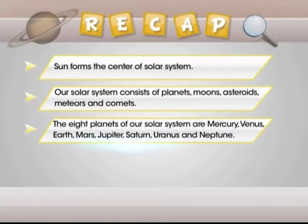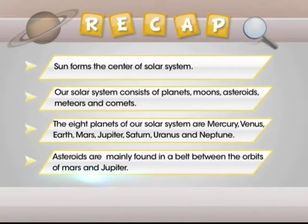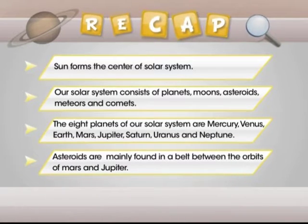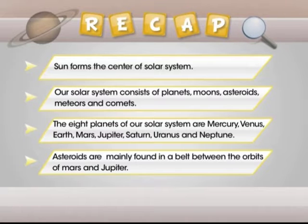The eight planets of our solar system are Mercury, Venus, Earth, Mars, Jupiter, Saturn, Uranus and Neptune. Asteroids are mainly found in a belt between the orbits of Mars and Jupiter.